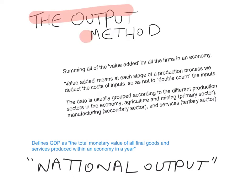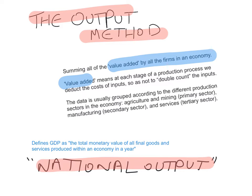The output method focuses on the output flow and measures what we call national output. The measuring body sums up all the value added by all the firms in the economy. Value added means that at each stage of the production process, we deduct the costs of inputs so as not to double count them. For example, if a farmer produces wheat and that wheat goes into bread production, you'd be double counting the wheat if you included it in both — so you deduct the costs of inputs and only add the value added.